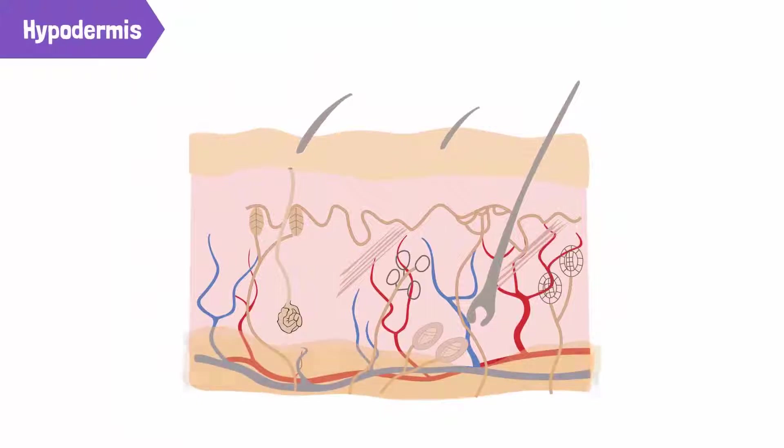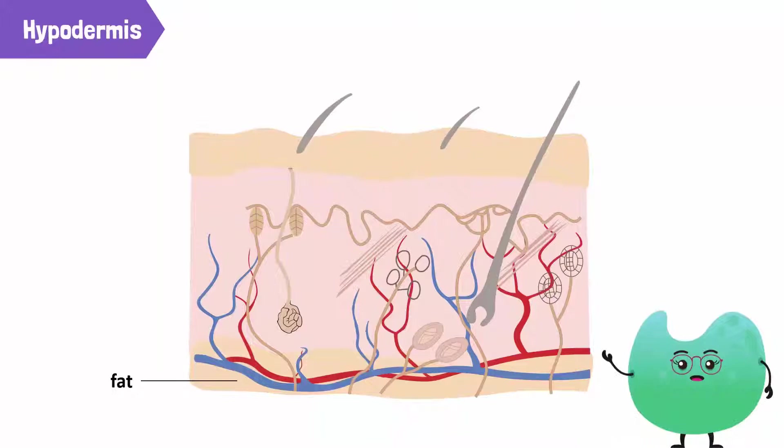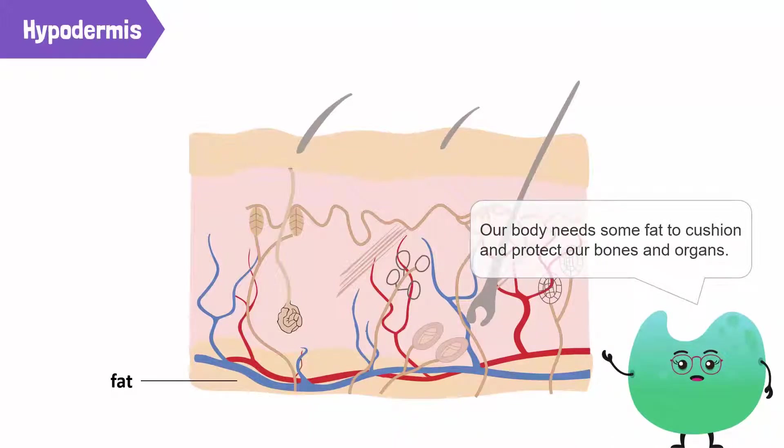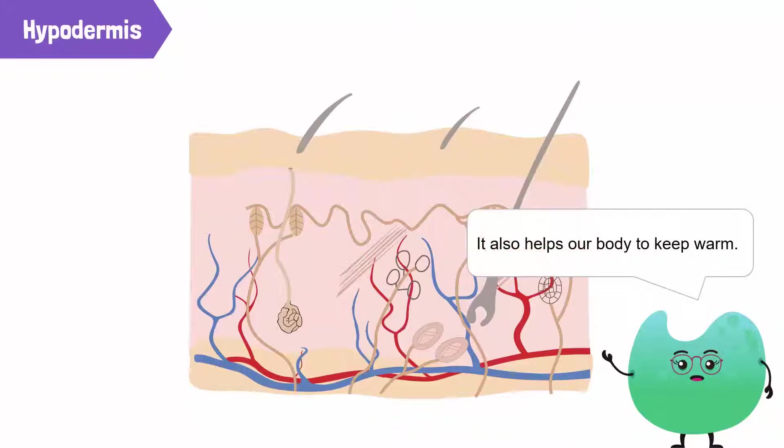The hypodermis is the deepest layer of the skin. It stores fat. Our body needs some fat to cushion and protect our bones and organs. It also helps keep our body warm.